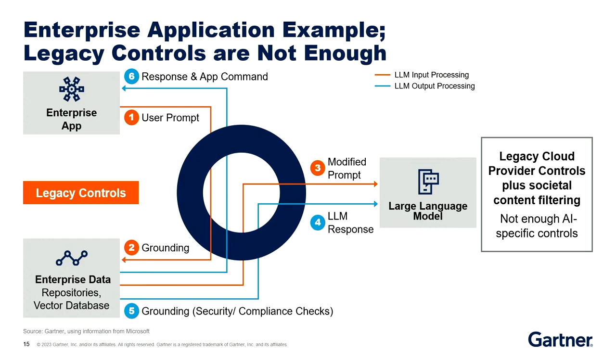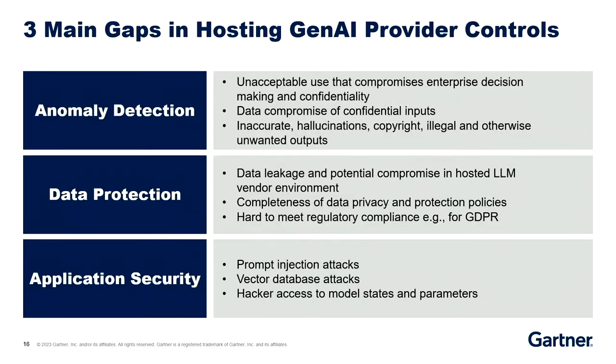The vendors have legacy controls too — they've hardened their models, red-teamed them, and have societal content filtering looking for hatred and violence, but that's not enough either. There are three main gaps in what you as a user will get from Gen AI providers. First, anomaly detection to look for anomalies on the inputs and outputs — all interactions with the foundation model. Is it violating your enterprise policy? Are you sending confidential data? Your DLP systems aren't looking at these new policies, so you need new screening. On the outputs, nothing is looking to see if it's accurate, if it's a hallucination, or if it has copyright issues. You need to put those input-output filters in for anomaly detection.